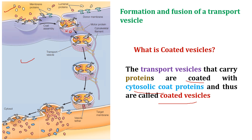At the target membrane, the coat is removed, allowing the membrane to fuse. The vesicle then empties its luminal contents — the luminal cargo proteins — and inserts membrane proteins into the target membrane. So first the vesicle fuses with the target membrane, then it empties its protein cargo.